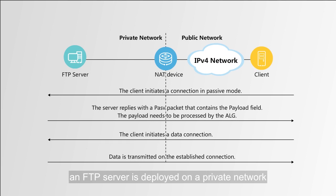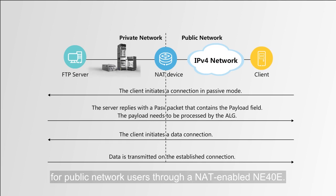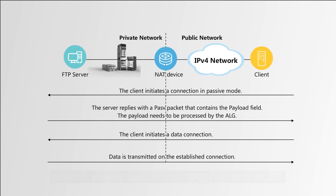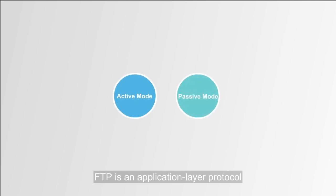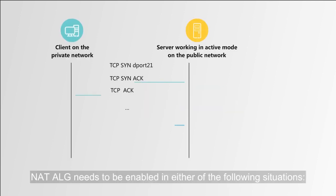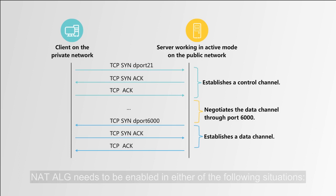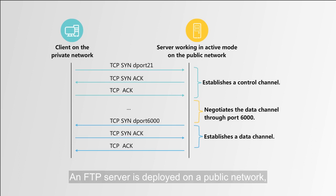In this example, an FTP server is deployed on a private network and connected to a public network to provide FTP services for public network users through a NAT-enabled NE40E. FTP is an application layer protocol that works on either active or passive mode. Based on network deployment, NAT ALG needs to be enabled in either of the following situations.